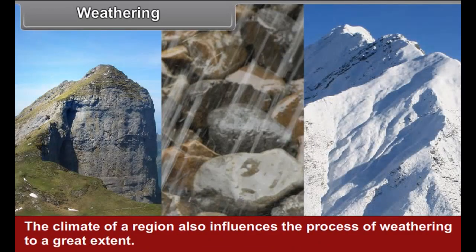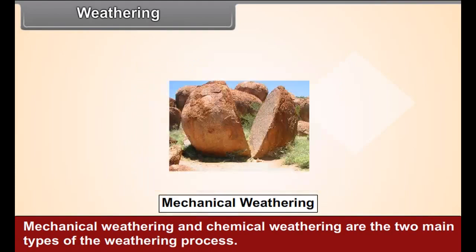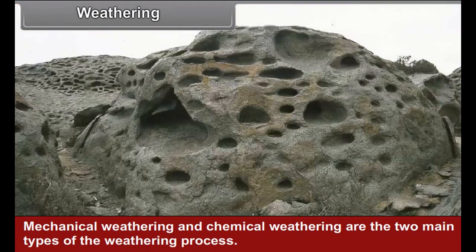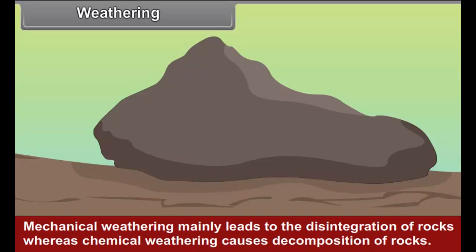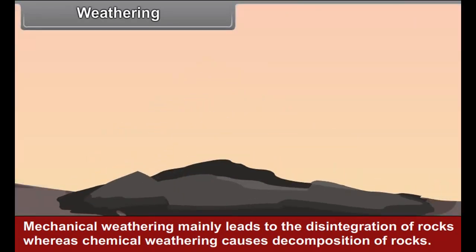The climate of a region also influences the process of weathering to a great extent. Mechanical weathering and chemical weathering are the two main types of weathering process. Mechanical weathering mainly leads to the disintegration of rock, whereas chemical weathering causes decomposition of rocks.